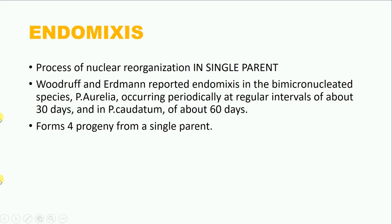Next is the process of endomyxis, which is seen in a single parent organism. It was reported for the first time by two scientists, Woodruff and Erdmann, in the bi-micronucleated species paramecium aurelia, in which it occurs periodically at a regular interval of about 30 days, and in other paramecia it occurs at an interval of about 60 days. At the end of endomyxis, we get four daughter progeny from a single parent.